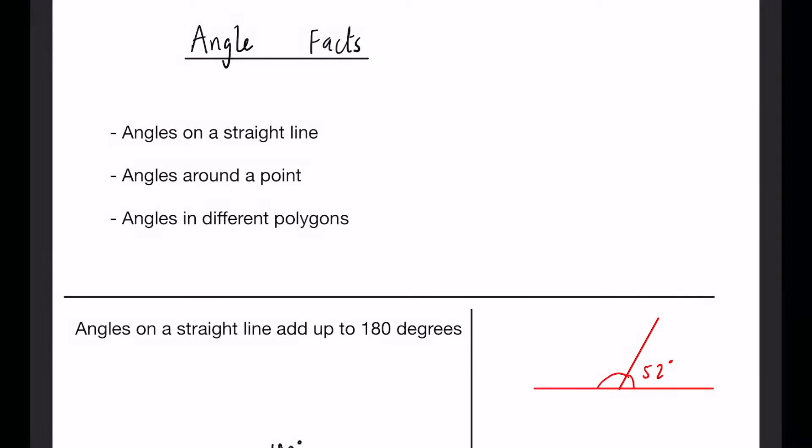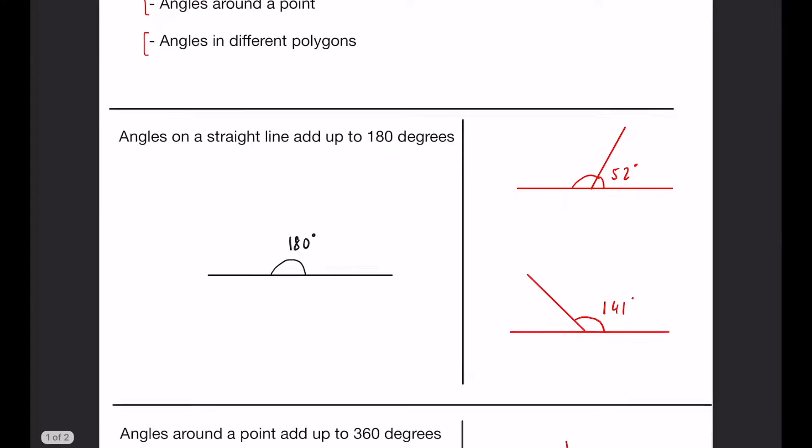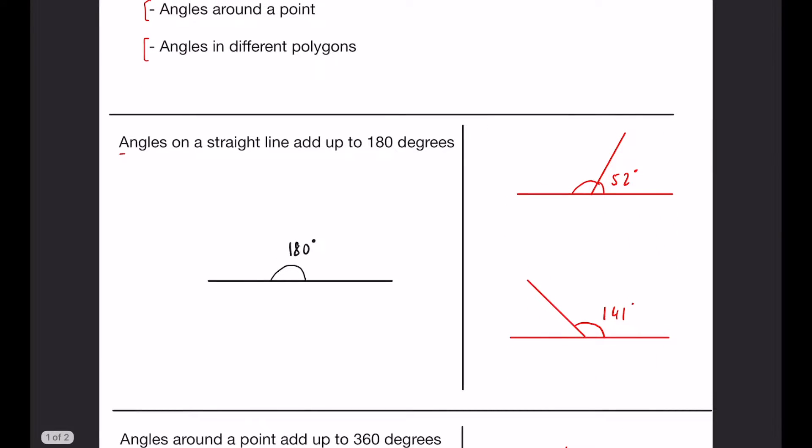So in this video we're going to be looking at angles on a straight line, angles around a point, and then angles in different polygons. So first of all, angles on a straight line. Some of you may know angles on a straight line add up to 180 degrees.